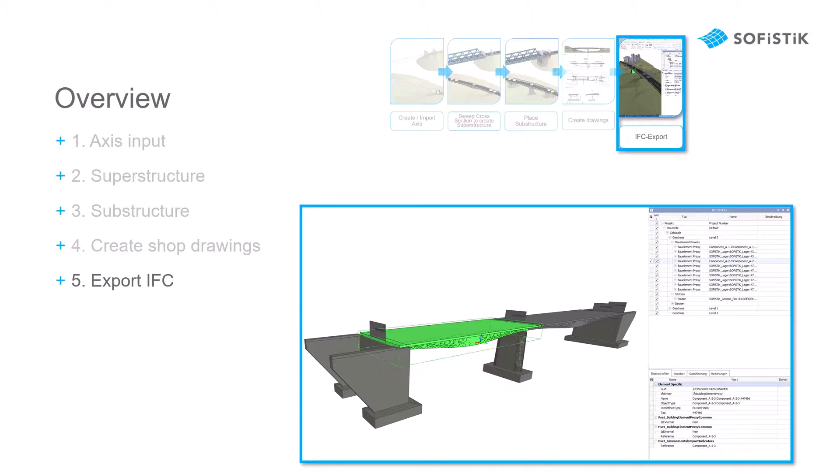Everything we create with the Sophistic Bridge and Infrastructure Modeler is directly incorporated into Revit, meaning that we can use Revit's own IFC export function to incorporate our project directly in an OpenBIM workflow. This step will not be covered by this Getting Started.